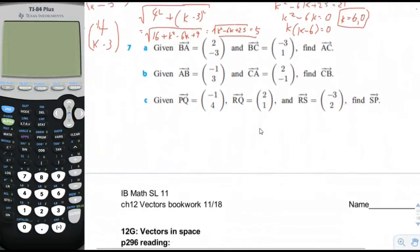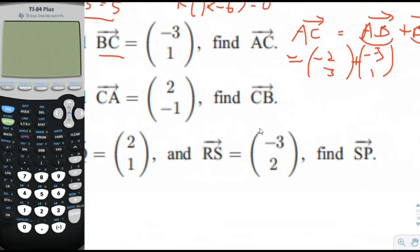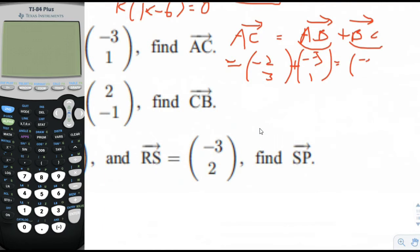Number 7. Given that vector BA is equal to 2, negative 3, and vector BC is equal to negative 3, 1, find AC. Just remember that the vector AC is equal to the vector AB plus the vector BC. Now let's see. Do we have the vector AB? No, but we have something close to it. We have the vector BA. Do we have the vector BC? Yes, we do. So AC would equal to the opposite of BA, which would be negative 2, positive 3, added to negative 3, 1. Add these together. And so that would give us negative 5, 4.